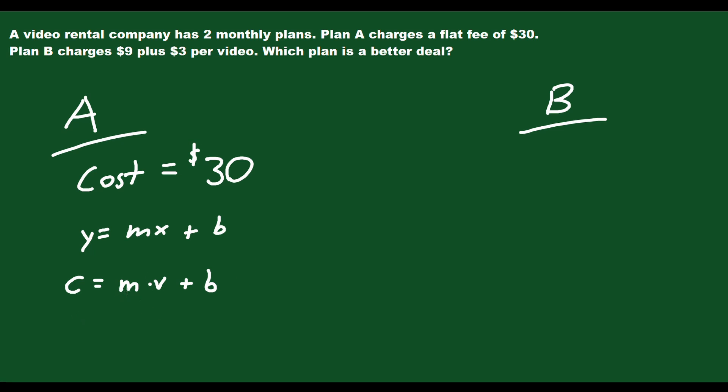So really, you don't have a slope, because it doesn't matter how many videos you end up renting, plan A charges you $30 no matter what. So you would just say c is equal to 30. This term wouldn't exist, you'd have a slope of zero.